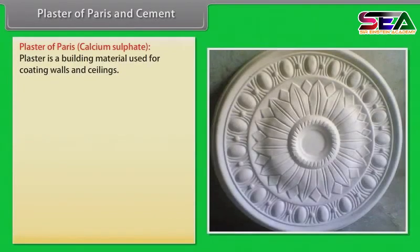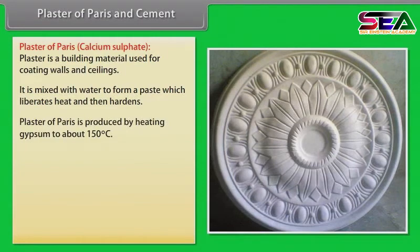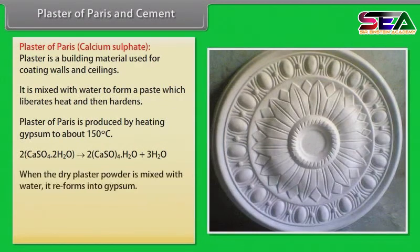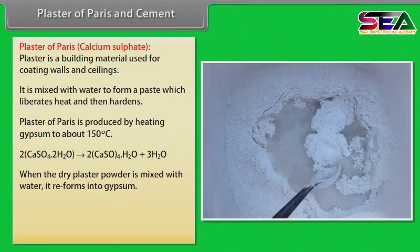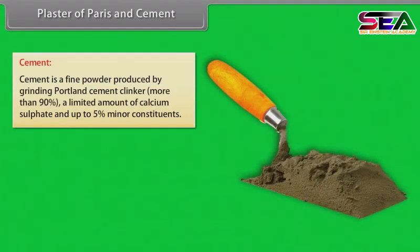Plaster of Paris is a building material used for coating walls and ceilings. It is mixed with water to form a paste which liberates heat and then hardens. Plaster of Paris is produced by heating gypsum to about 150 degrees Celsius. When dry plaster powder is mixed with water, it reforms into gypsum. If gypsum is heated above 200 degrees Celsius, anhydrite is formed, which will also reform as gypsum when mixed with water.